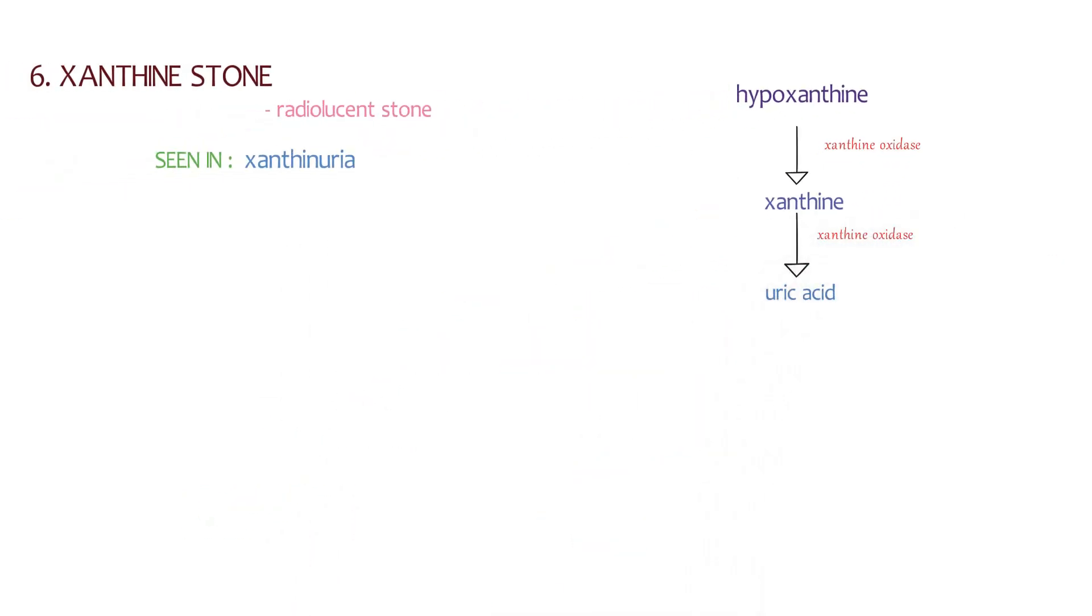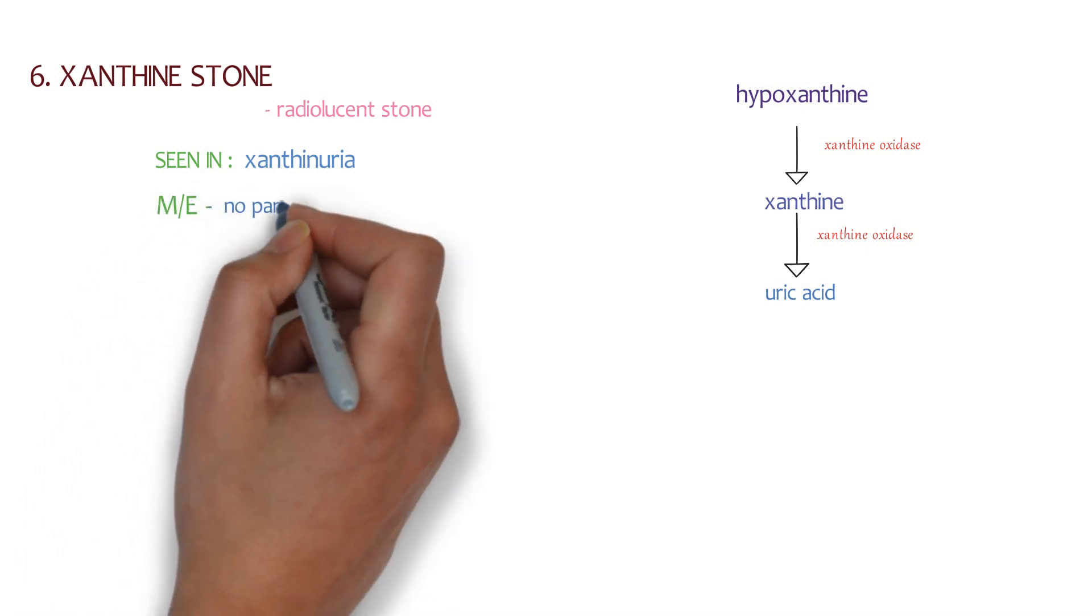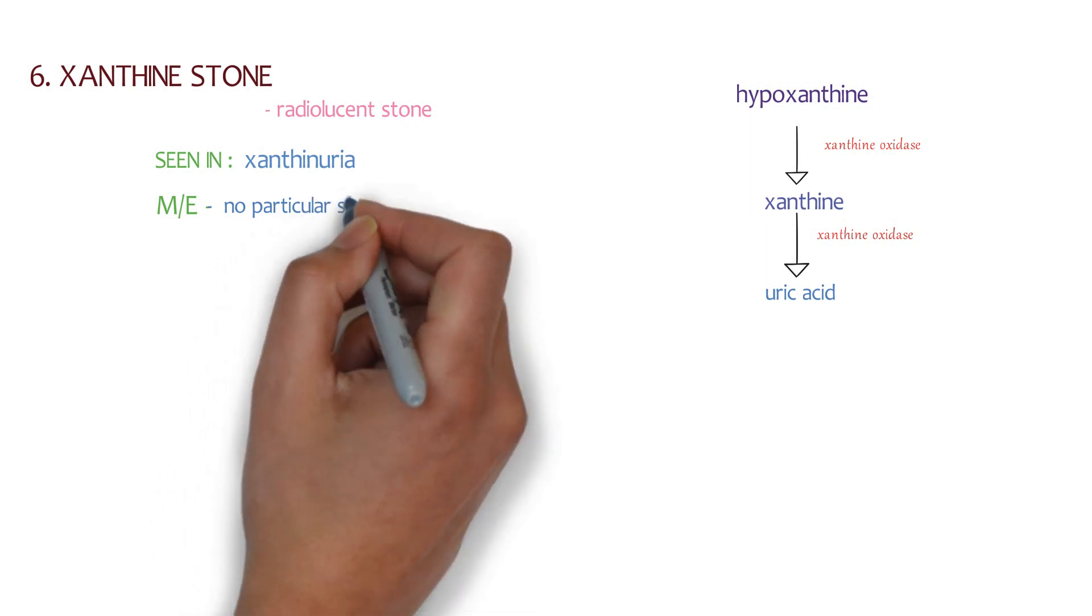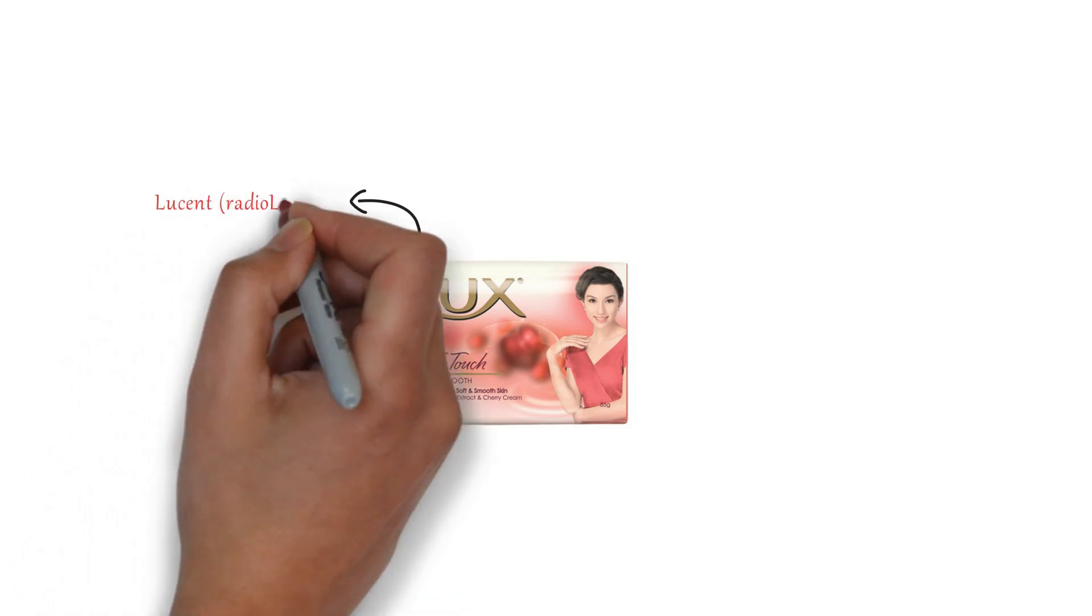In macroscopic examination, there is no particular shape. So we have two radiolucent stones: urate stones and xanthine stones. This is the mnemonic UX - U for lucent radiolucent and U means urate stone, and X for xanthine stone.